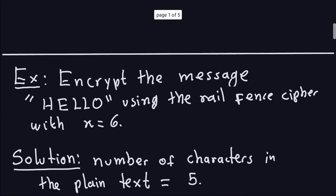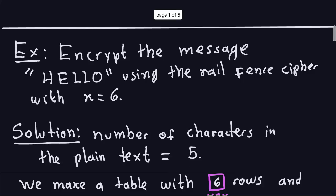So let's look at this example. I have the example encrypt the message HELLO, very simple message, using the Rail Fence cipher with a key of 6. Now HELLO, if you count the number of characters, has 5 characters. So my plaintext will have 5 characters and my key is 6, because the message is hello.